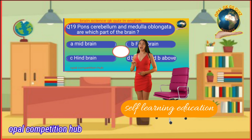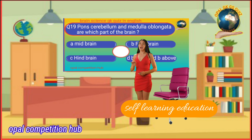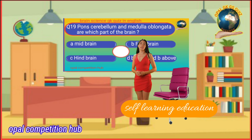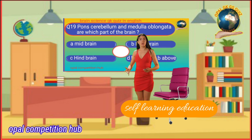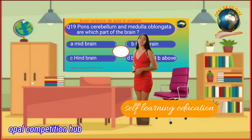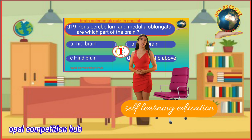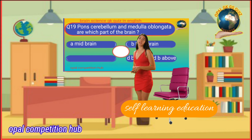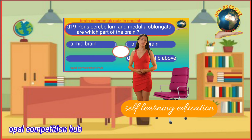Question number 19: The cerebellum and medulla oblongata are part of which section of the brain? Option A: Midbrain. Option B: Forebrain. Option C: Hindbrain. Option D: Both A and B. Your time starts now. Your answer will be Option C: Hindbrain.